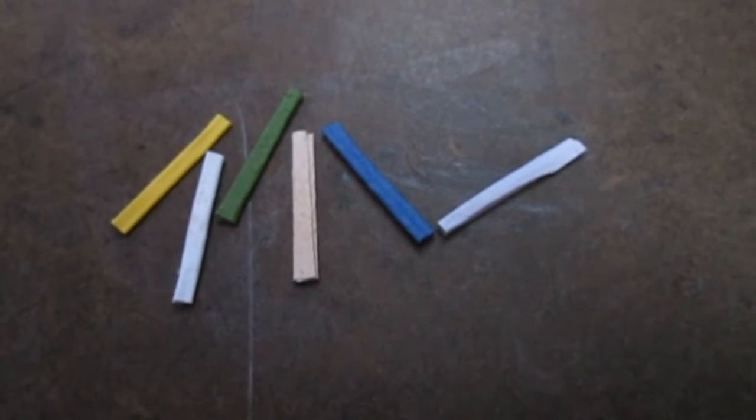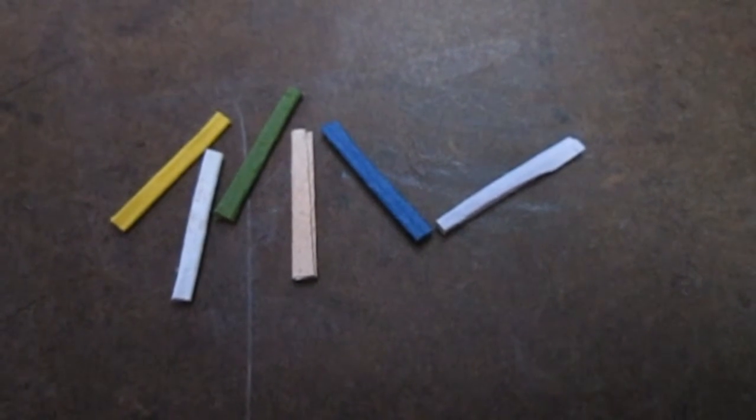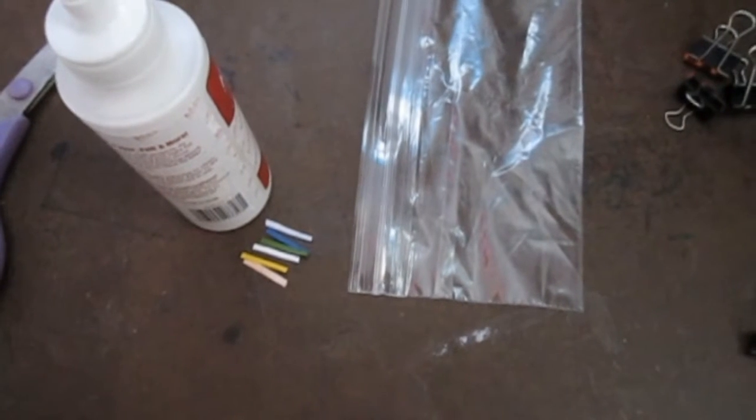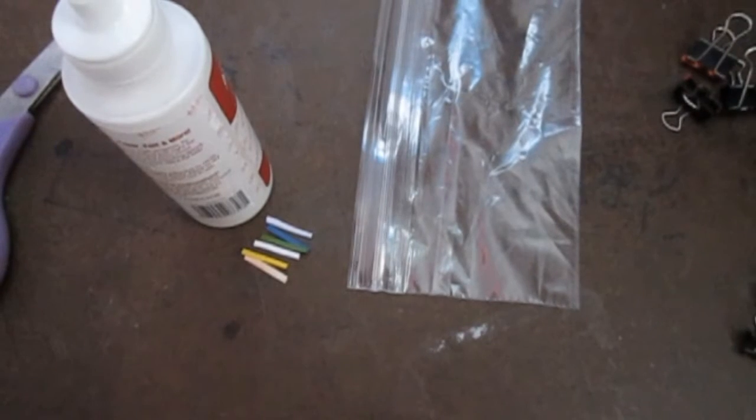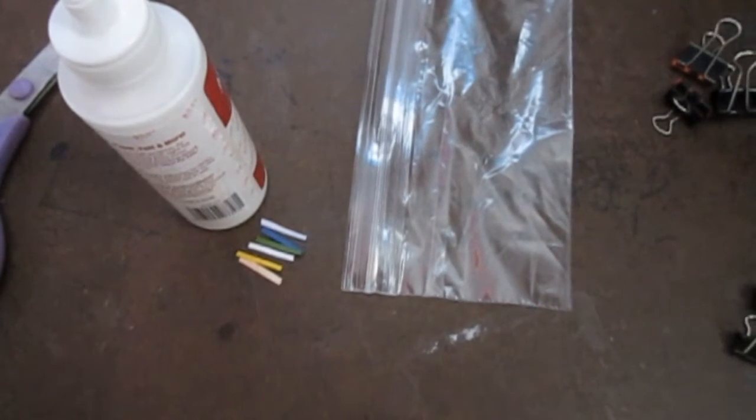Also, if the ends are uneven, you can just chop the ends off to make them nice and flat. As a bonus craft, you can use a plastic bag and tacky glue to make an art pouch to hold your new chalks.